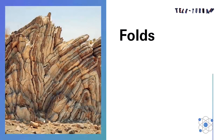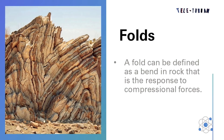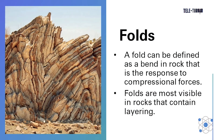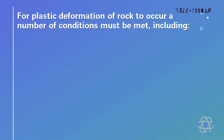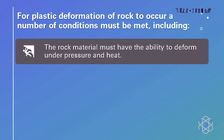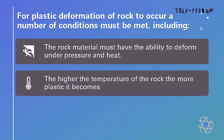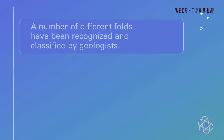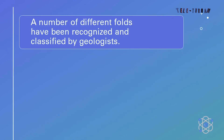Changes in shape and volume occur when stress and strain cause rock to buckle and fracture, or crumple into folds. A fold can be defined as a bend in a rock that responds to compressional forces. Folds are most visible in rocks that contain layering. For plastic deformation of rocks to occur, a number of conditions must be met: the rock material must have the ability to deform under pressure and heat; the higher the temperature of the rock, the more plastic it becomes; and pressure must not exceed the internal strength of the rock — if it does, fracturing occurs.